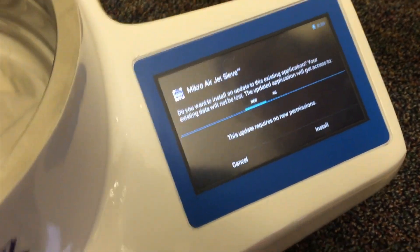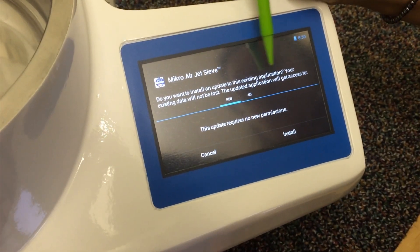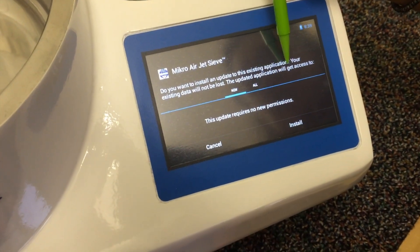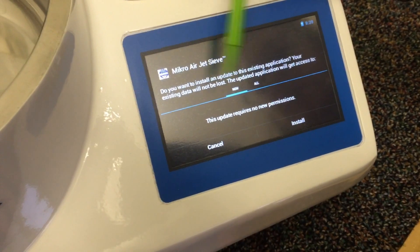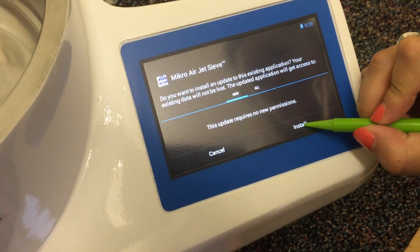Once we get to this page it says, do you want to install an update to this existing application? Your existing data will not be lost. The updated application will get access. You want to select install. This update requires no new permissions and we're going to select install.